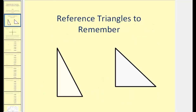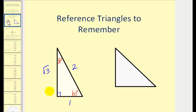The first thing we need to remember is if we have a 30-60-90 right triangle, the relationship among the three sides would be one for the shortest leg, two for the hypotenuse, and square root of three for the other leg. Of course it could be any multiple of these, but this is the most common way to represent the relationship among the three sides of a 30-60-90 right triangle.